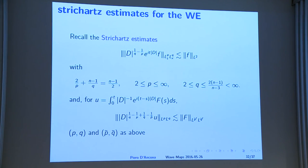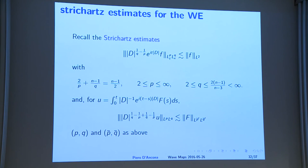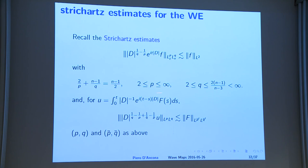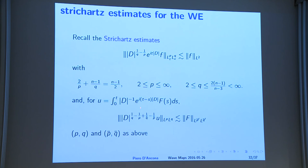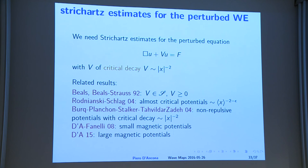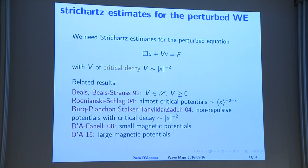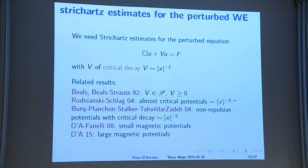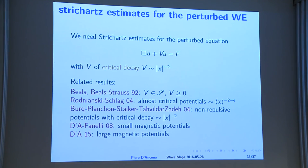We can prove the full set of Strichartz estimates — with the exception of the endpoint — also in this case. These are the standard homogeneous Strichartz estimates with the usual admissibility condition on the pair (p,q), and the inhomogeneous version as well. This is precisely the set of estimates we can prove, in some coordinates with a certain weight.